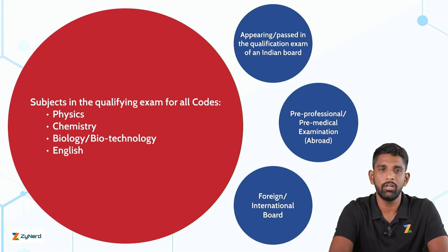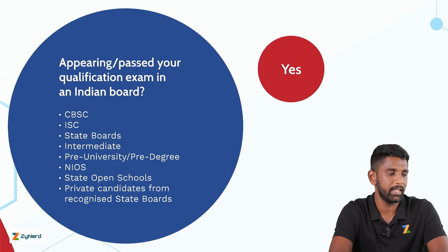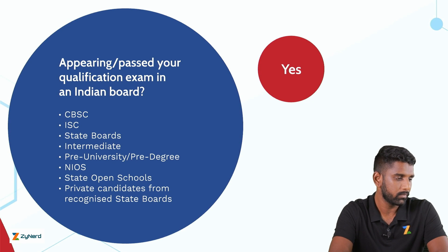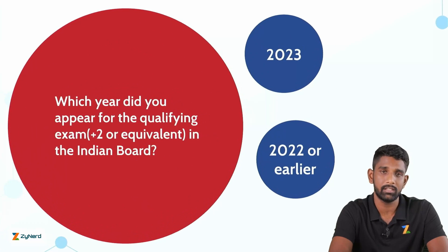Let's look at condition number 1: if you are a candidate who is appearing or passed their qualifying examination in an Indian board. The Indian boards are: CBSE, ISC, State Board, Intermediate Board, Pre-University or Pre-degree, NIOS which is the National Institute of Open Schooling, State Open Schools, and also private candidates from recognized state boards. If the answer is yes, then let's move to the next condition.